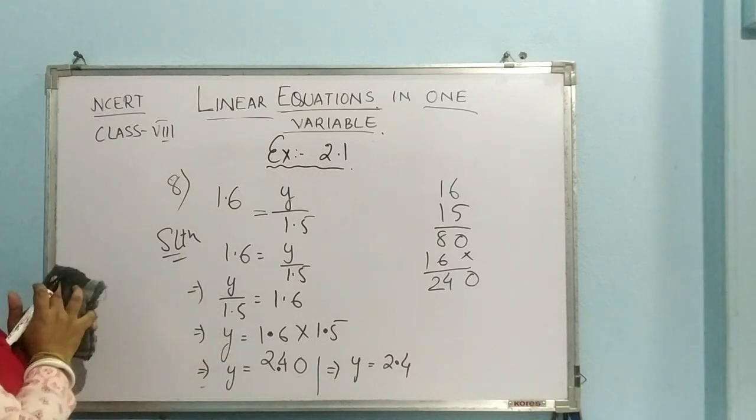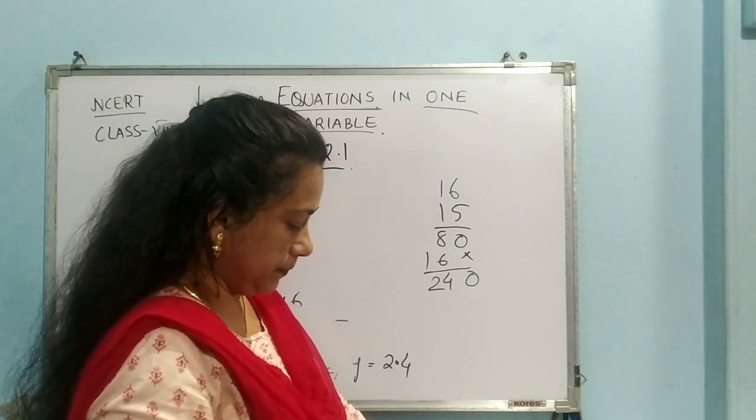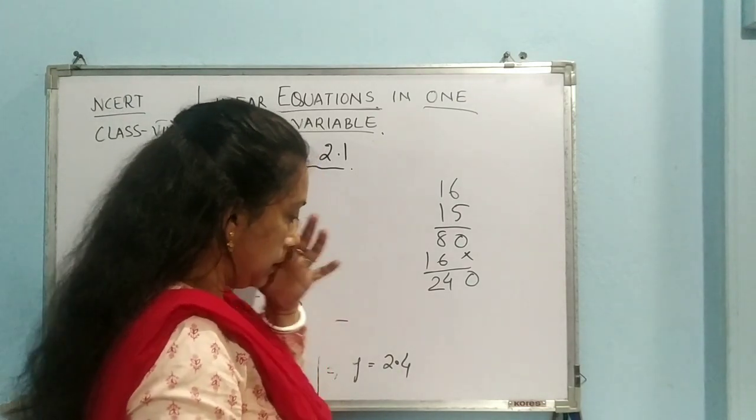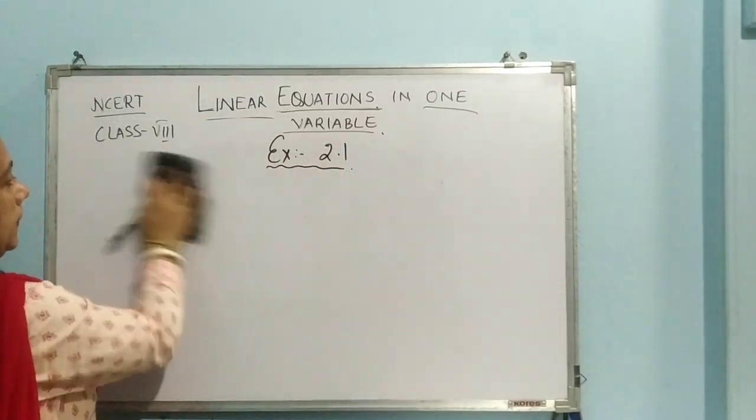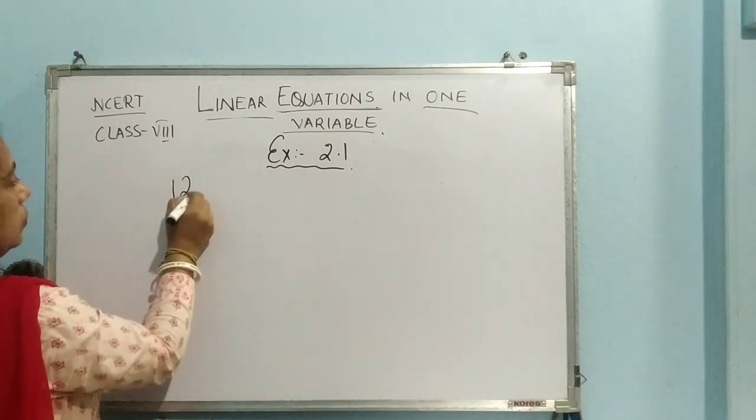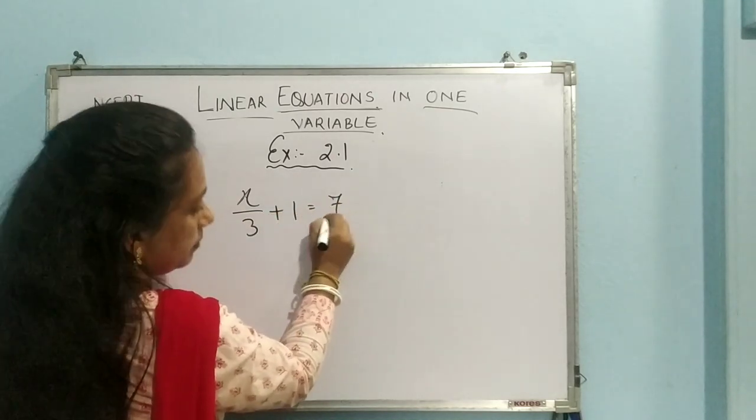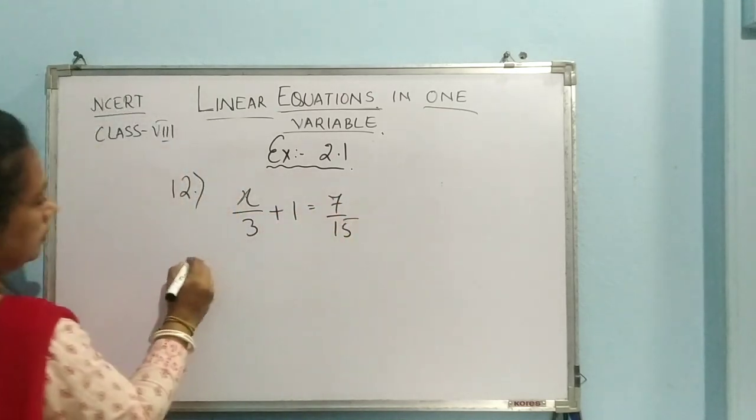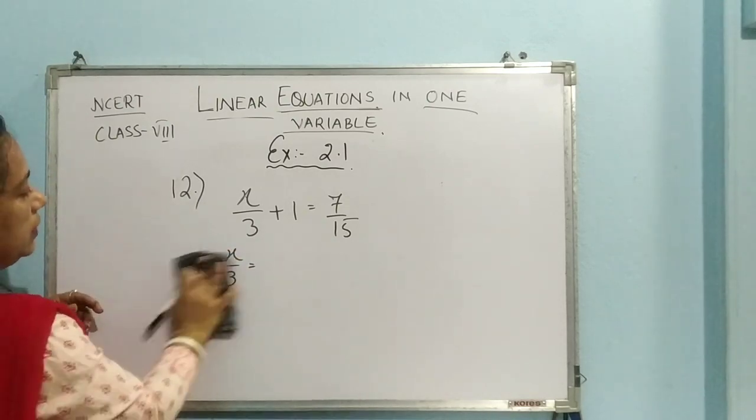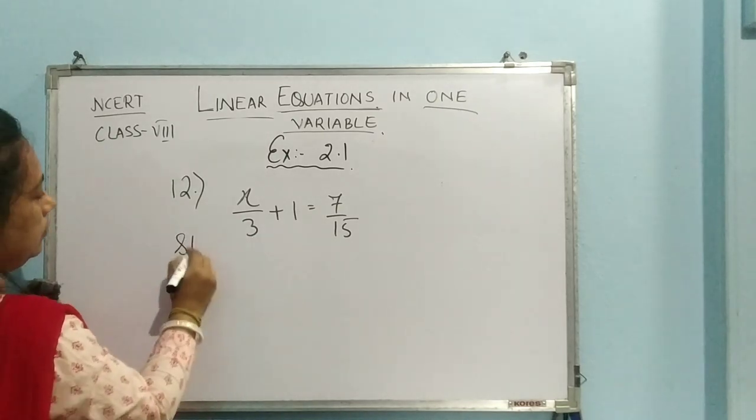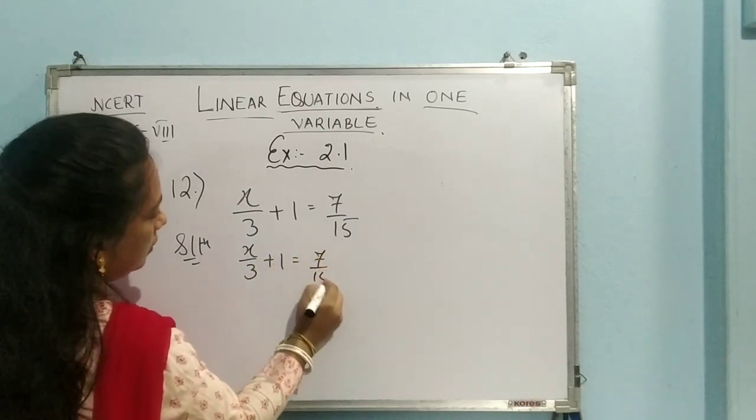So you have understood this one also, I think. So let us move on to next question. 9 is there. 9 you can do, 10. Let us move on to the 12th question. 12th question. 12. Very simple. So x by 3 plus 1 equal to 7 by 15.